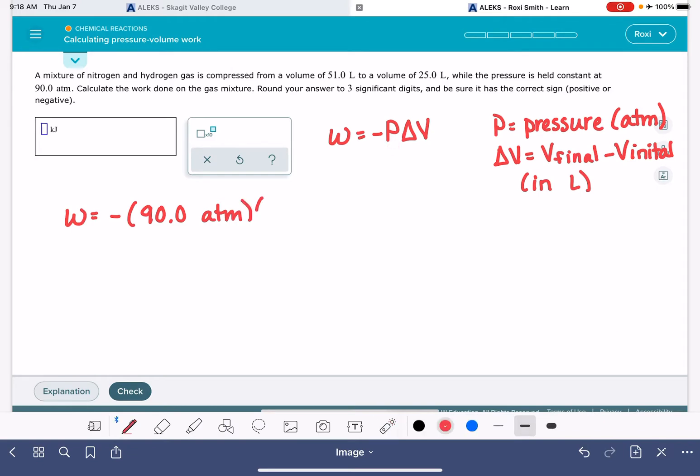And then the change in volume. We're going to start by finding the final volume. It says that the gas is compressed from a volume of 51, so that means that is my initial volume, to a volume of 25, so that means that's my final volume.